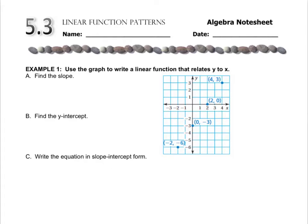So the slope in this case is up 3, over 2, so the slope is 3 over 2. The y-intercept is right here at 0, negative 3. So the equation is y equals 3 over 2x minus 3.